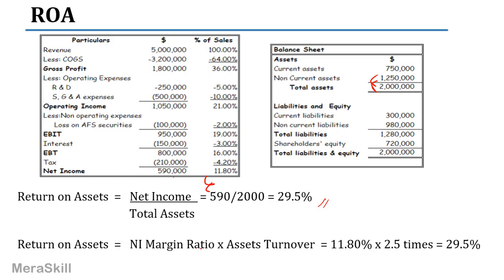Verifying via DuPont: NI margin ratio is 11.8% (590,000 divided by 5,000,000 sales multiplied by 100), and asset turnover is 2.5 times (sales of 5 million divided by assets of 2 million). Multiplying 11.8 by 2.5 gives 29.5 — the same result as before.